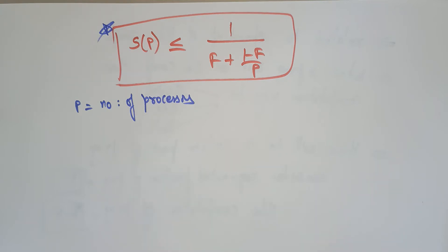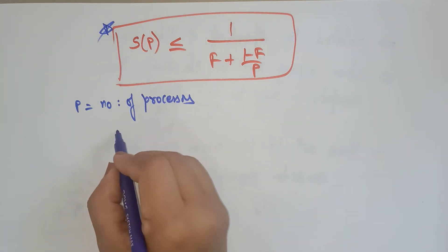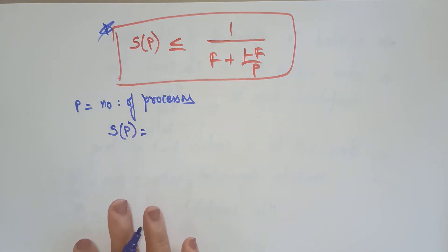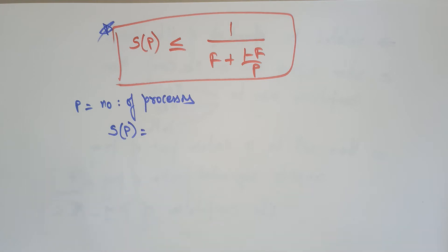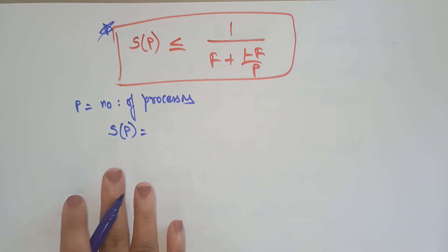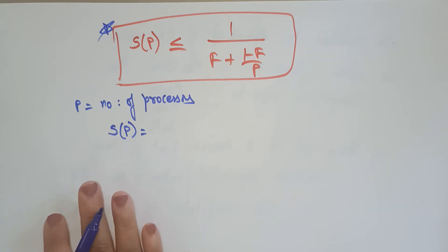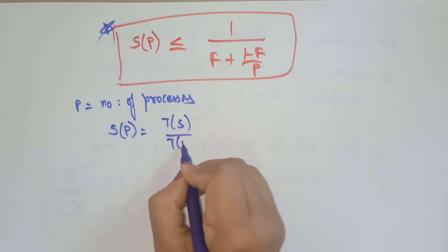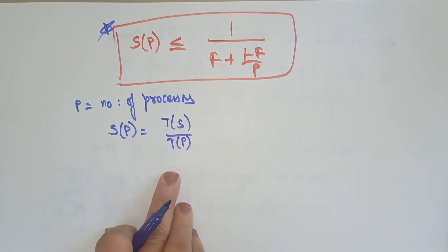Let's take an example of the execution of a task. Simply take some task on a computer with a single processor, and P is the number of processors. We already know the speed-up formula S(P). The speed-up is nothing but sequential time divided by parallel time: T(S) is sequential, T(P) is parallel. Whenever sequential means T(1) and parallel means T(N).